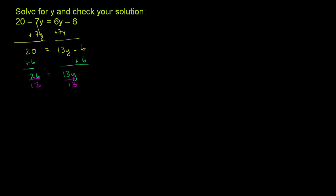On the right-hand side, 13 times y divided by 13, well, that's just going to be y. So this is just y. And then 26 divided by 13, that is 2. So our solution we got is y is equal to 2.